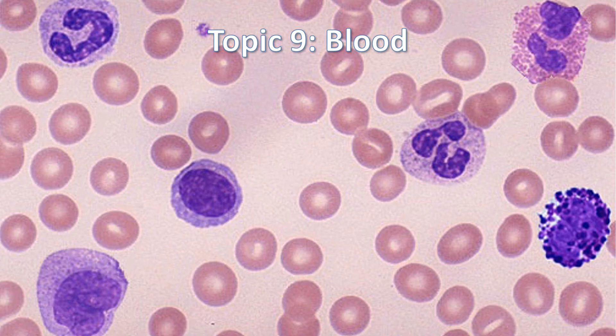And now for something completely different. We're going to have a look at blood. What you're seeing in this image is human blood as it appears under the light microscope, and you'll have a chance to look at your own blood in the lab. We're seeing lots of red blood cells, or erythrocytes, and of course they're going to transport oxygen and carbon dioxide.